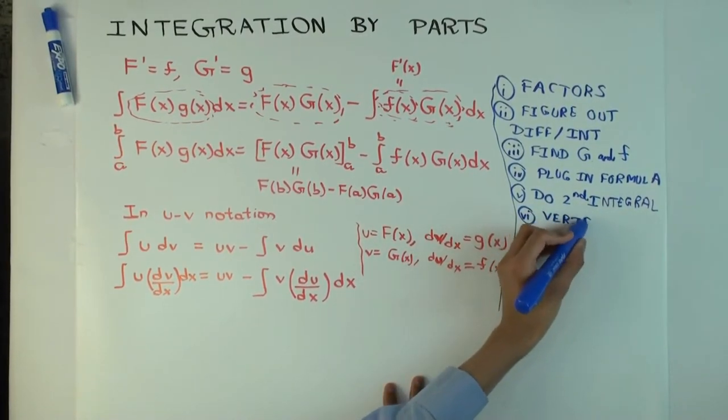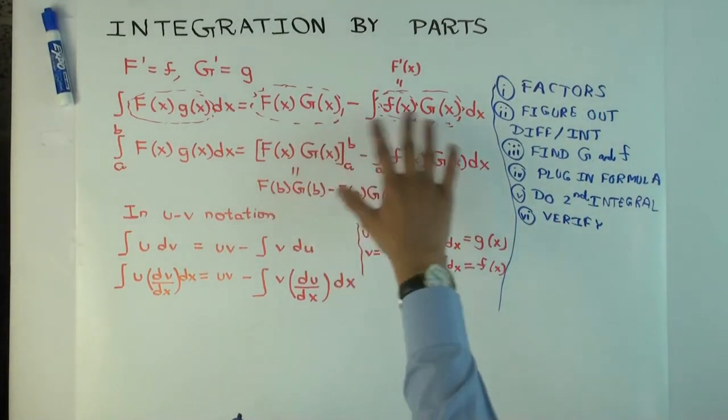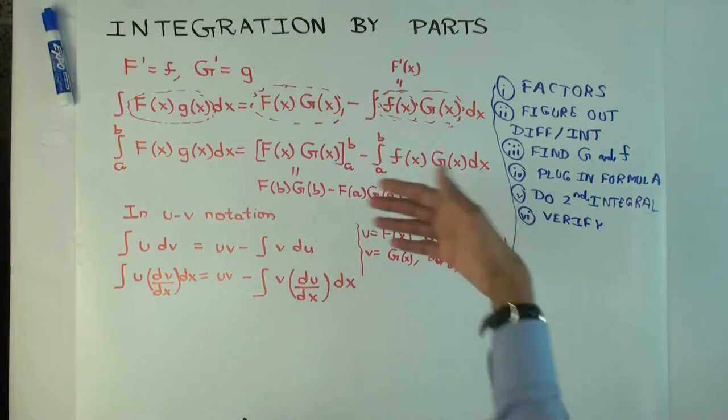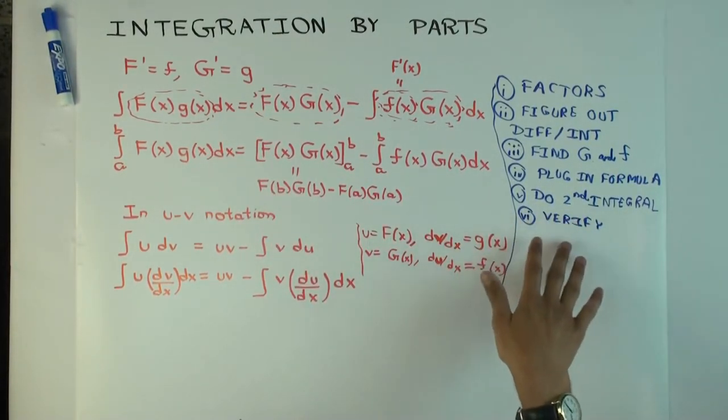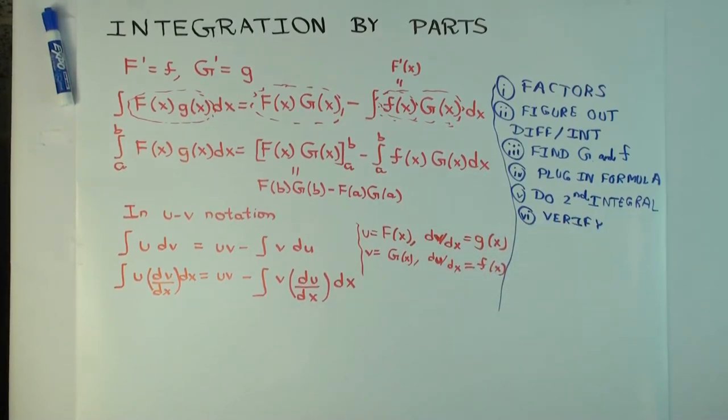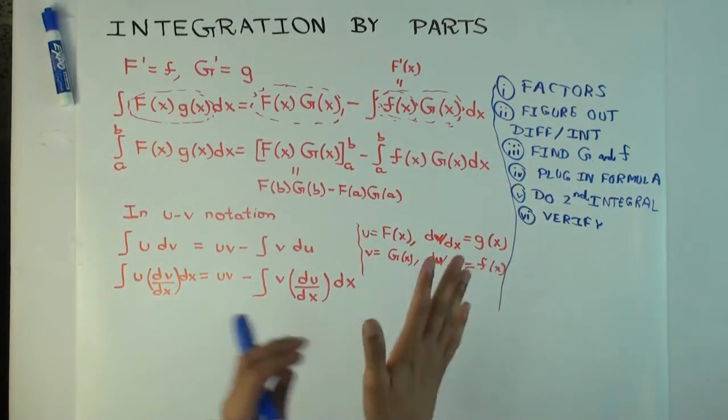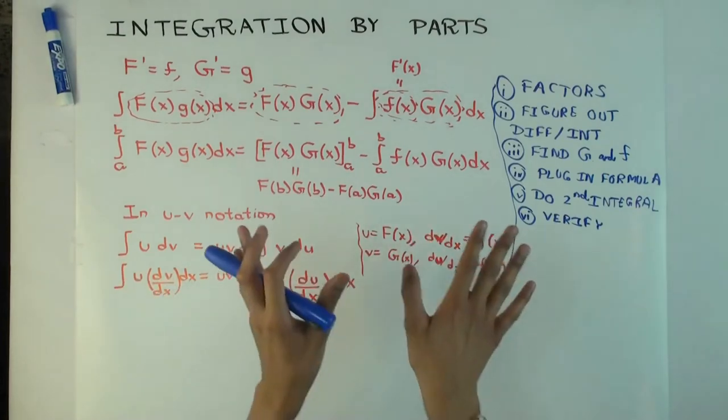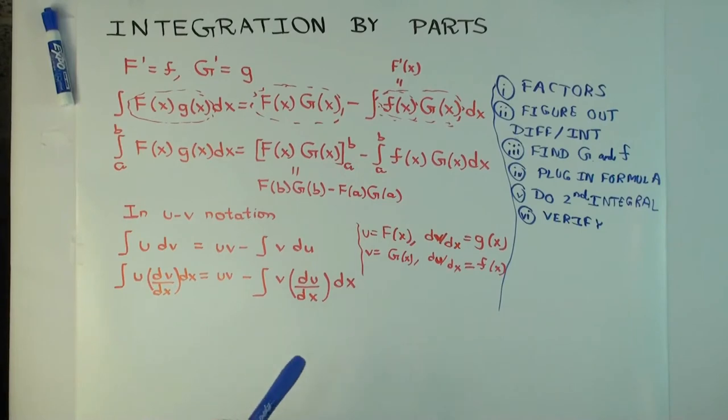And step six, if it's optional, you can just, after you're done with this, you can verify by differentiating. Okay? Verify by differentiating the answer you get, you differentiate and check that. When you do that verification, what should you be using as, like, what will happen when you do the verification? What kind of rule for differentiation do you think you'll use? Product rule. Product rule. Because integration by parts sort of reverses the process. So, when you're doing this verification, you should be getting something like a product rule, and something should cancel, and you should get something like this. Generally.